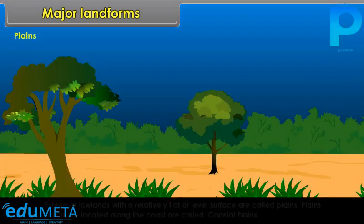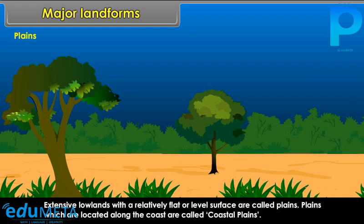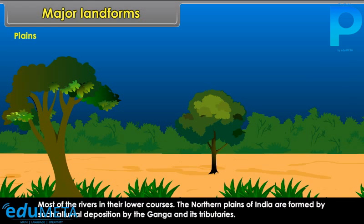Lava plateaus are rich farming areas as they are made up of fertile black soil. Extensive low lands with a relatively flat or level surface are called plains. Plains located along the coast are called coastal plains. The northern plains of India are formed by alluvial deposition by the Ganga and its tributaries.